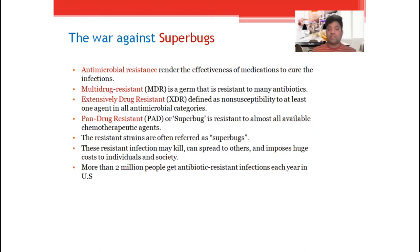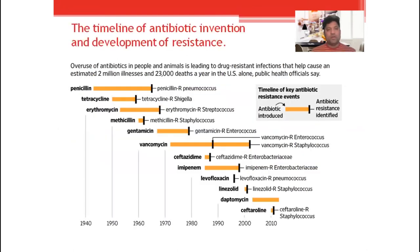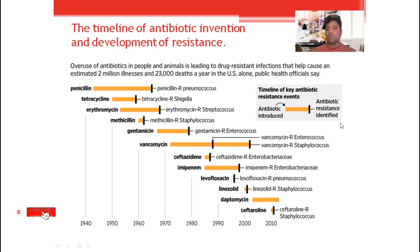These resistant infections may kill, can spread to others, or impose a huge cost to the individual, society, and healthcare system. More than 2 million people get antibiotic resistant infections each year in the United States. The overuse of antibiotics in people and animals is leading to drug resistant infections that cause an estimated 2 million illnesses and 23,000 deaths each year only in the United States, causing a huge problem in public health.